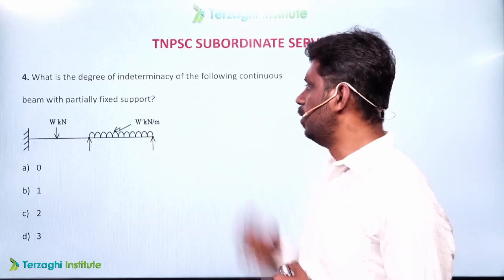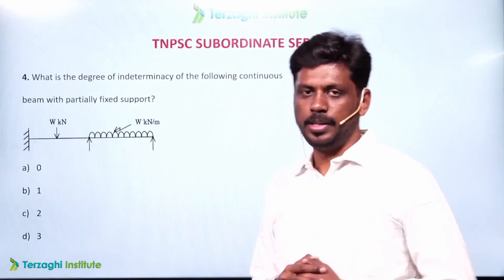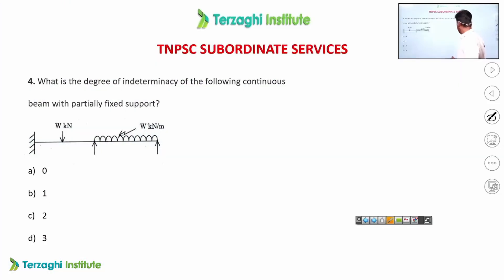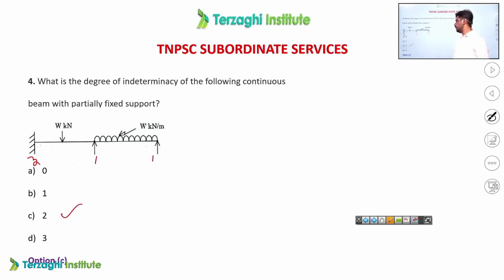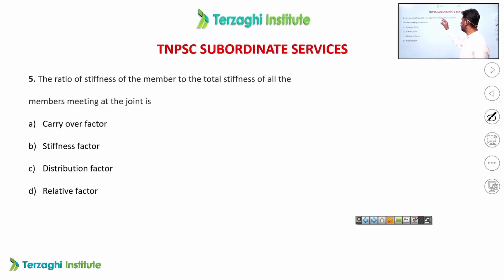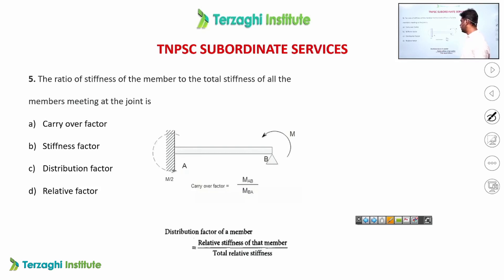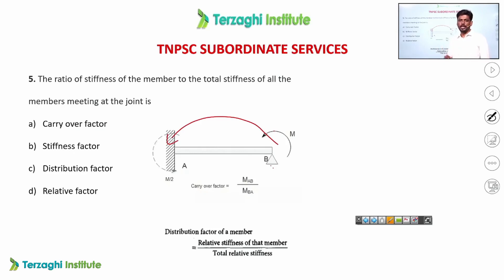The degree of indeterminacy of a continuous beam equals the number of unknowns minus the equilibrium equations. A fixed support has 3 unknowns (vertical, horizontal, moment); a roller has 1. With 5 total unknown forces and 3 equilibrium equations, the degree of indeterminacy is 5 - 3 = 2. The distribution factor in the moment distribution method is the relative stiffness divided by the total stiffness at the joint. The carry-over factor is 1/2 for a far fixed end, and 0 for a far pinned end.